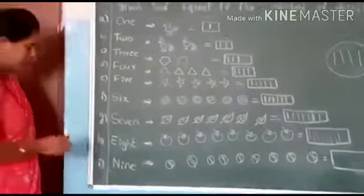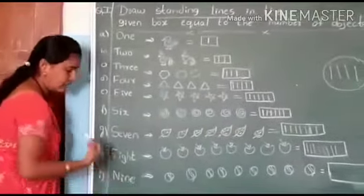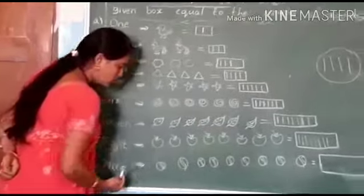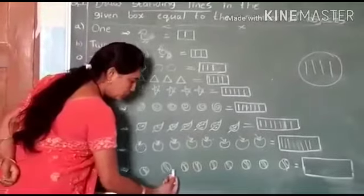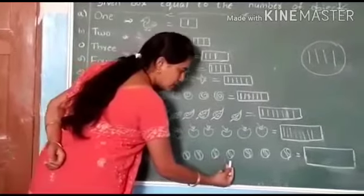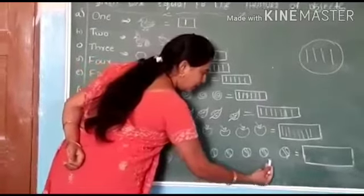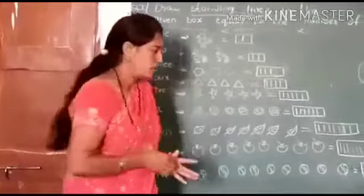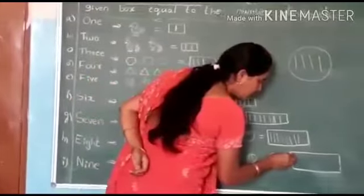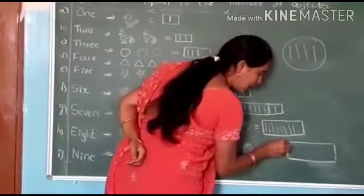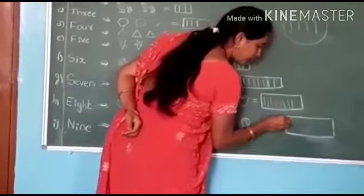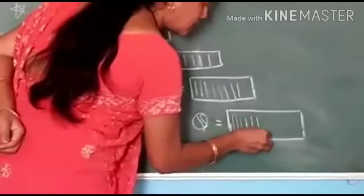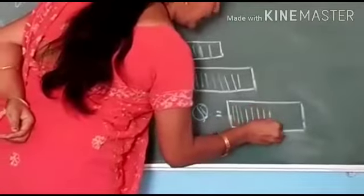That's the last one — N-I-N-E, 9. The number is nine. Count all: one, two, three, four, five, six, seven, eight, nine. How many are there, children? Those are nine. So we should draw here nine standing lines: one, two, three, four, five, six, seven, eight, nine.